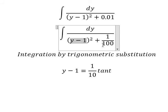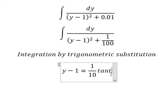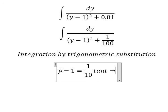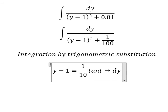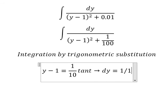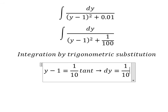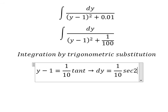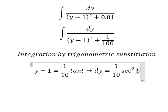We change tan²(t) plus 1 to sec²(t) and then simplify. Next we do the first derivative for both sides, and we have dy equals 1 over 10 sec²(t) dt.